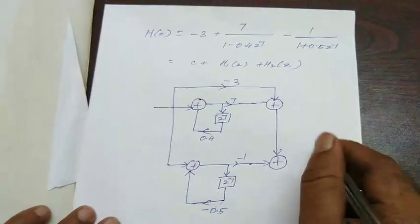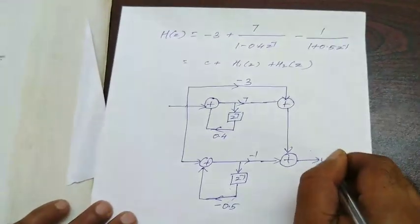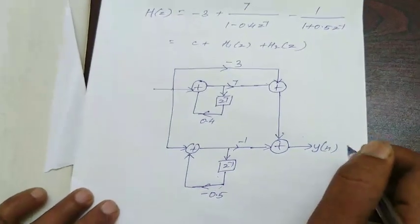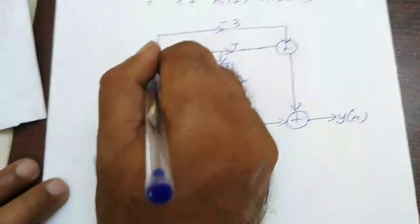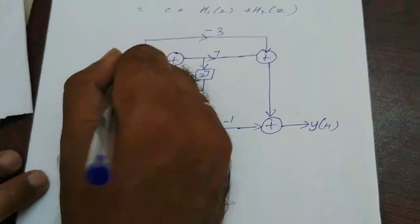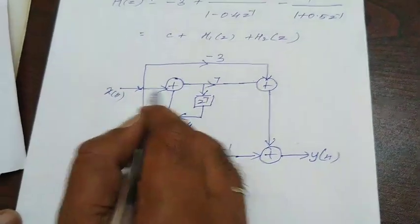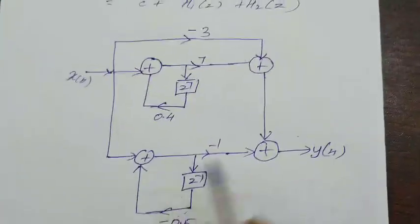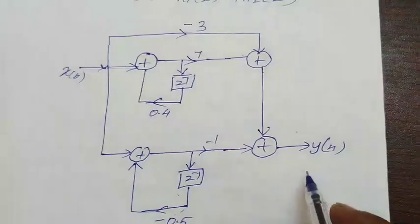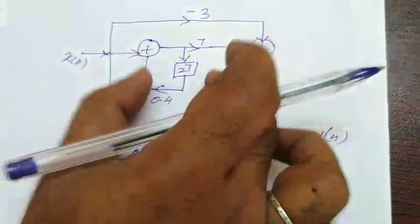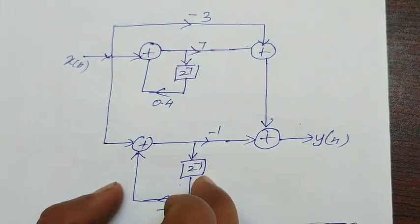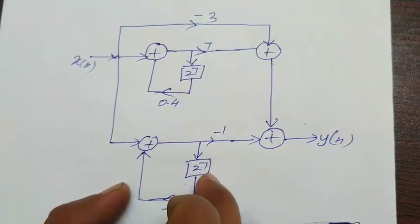Everything combined here. Therefore, you are getting the final output y of n and here it is nothing but x of n. The same x of n is divided into three category. Here also going, here also going, here also going and finally you are getting a single output y of n. This kind of realization is called as parallel form realization.